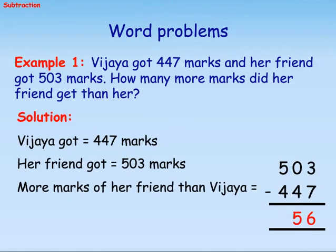Word problems. Example 1: Vijayar got 447 marks and her friend got 503 marks. How many more marks did her friend get than her? Solution: Vijayar got 447 marks, her friend got 503 marks. More marks of her friend than Vijayar equals 503 minus 447 equals 56.